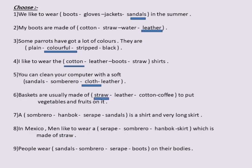The answer is straw — baskets are usually made of straw to put vegetables and fruits in. Number seven: a sombrero, hanbok, or serapé is a shirt and a very long skirt? The answer is hanbok. Number eight: in Mexico, men like to wear a serapé, sombrero, hanbok, or shirt which is made of straw? The answer is sombrero. Number nine: people wear sandals, sombrero, serapé, or boots on their bodies? The answer is serapé — people wear a serapé on their bodies.